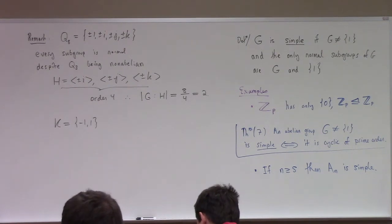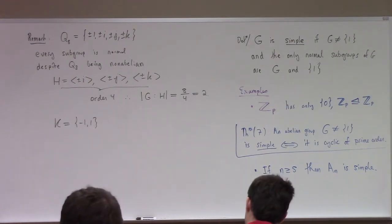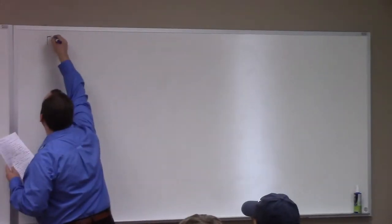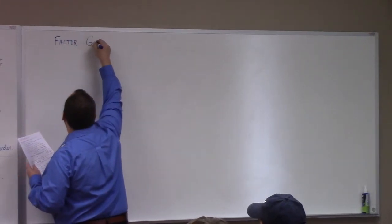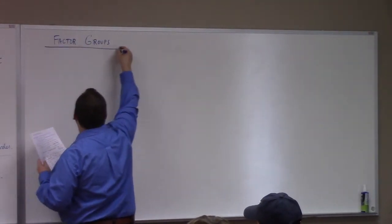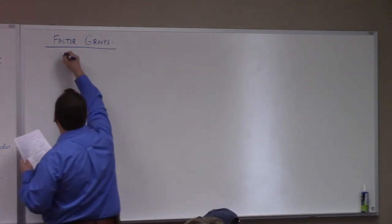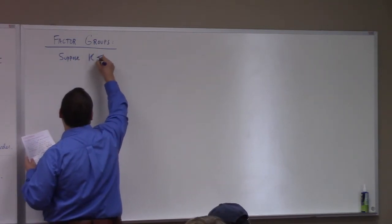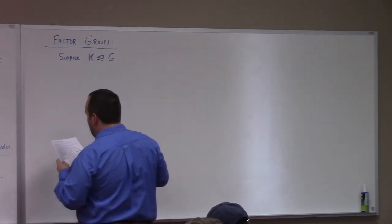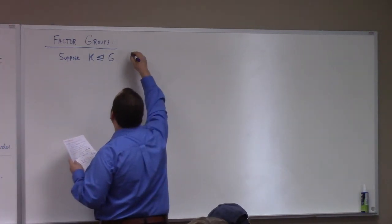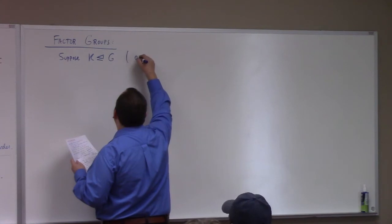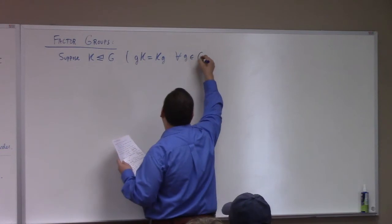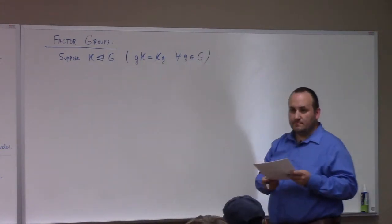Finally, section 2.8 is very long. Factor groups. Suppose that K is a normal subgroup of G, meaning gK equals Kg for all g in G — that was our definition. We had other characterizations, but that's one.